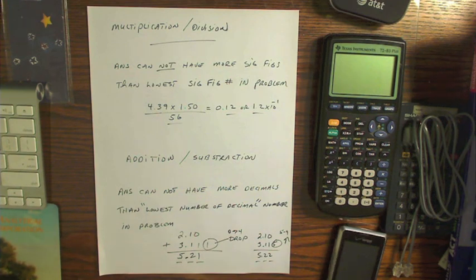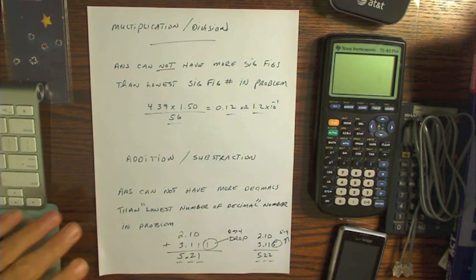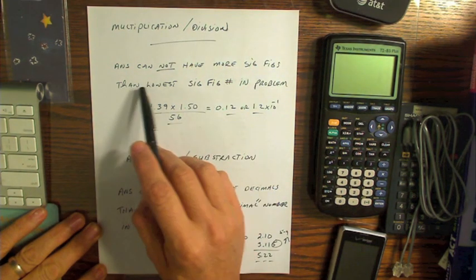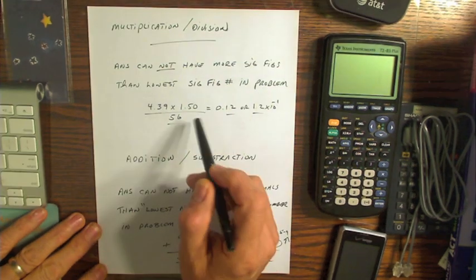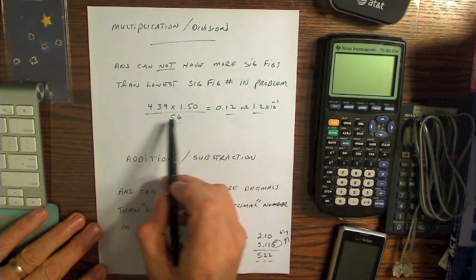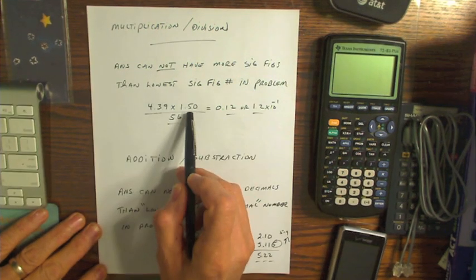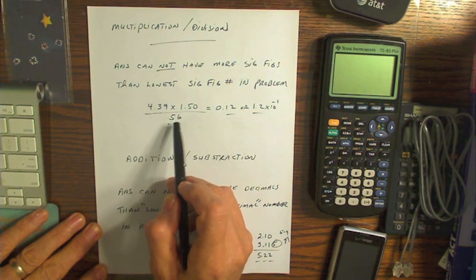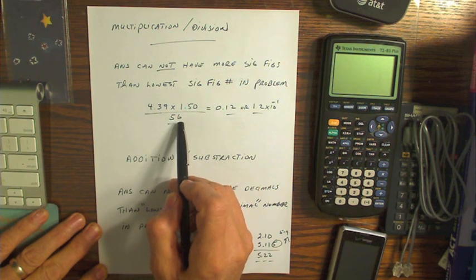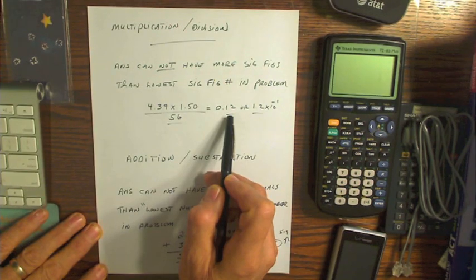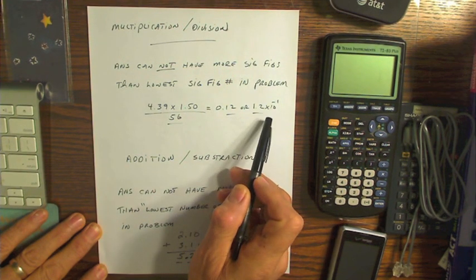Before I get to the calculator, let me go over a couple of rules: multiplication/division, and addition/subtraction. In multiplication and division, the answer cannot have more significant figures than the lowest significant figure count in the problem. Here's an example: 4.39 times 1.50 — each has 3 significant figures — divided by 56, which only has 2. Our answer can only have 2, and we write it as 0.12 or 1.2 times 10 to the minus 1.